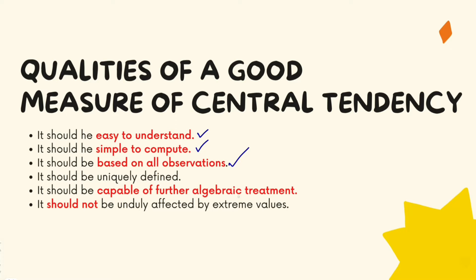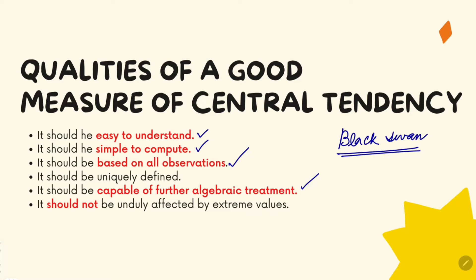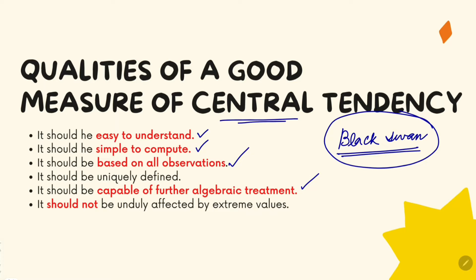We should be able to further treat it algebraically. In any data set there could be extreme values — outliers. Have you heard of the term 'black swan'? It is an outlier event. Black swans are not usually seen, but they occur. So if an outlier comes in, a central tendency measure should not be very highly affected by it. It should still have stability. That is also required from a good measure of central tendency.